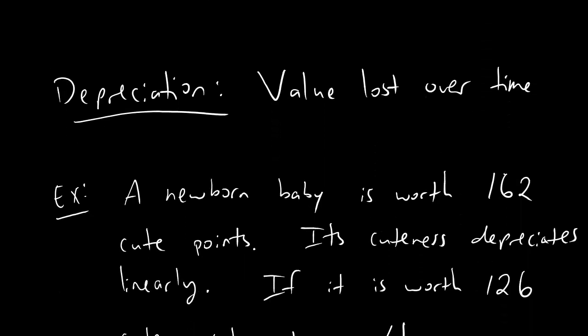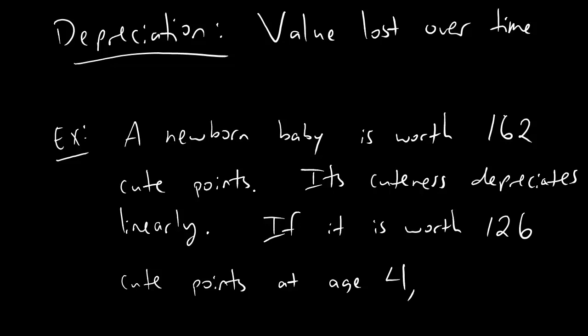First thing we want to talk about is this: depreciation in the mathematical sense is value lost over time. Here's a good example. There's a newborn baby and it's all pink and whiny and disgusting. And somehow its parents decide that it is worth 162 cute points. That's a lot of cute points people. When it's a newborn, it's worth this many cute points, but its cuteness depreciates. That in particular means that it loses cuteness points as time goes on. We are also told that its cuteness depreciates linearly.